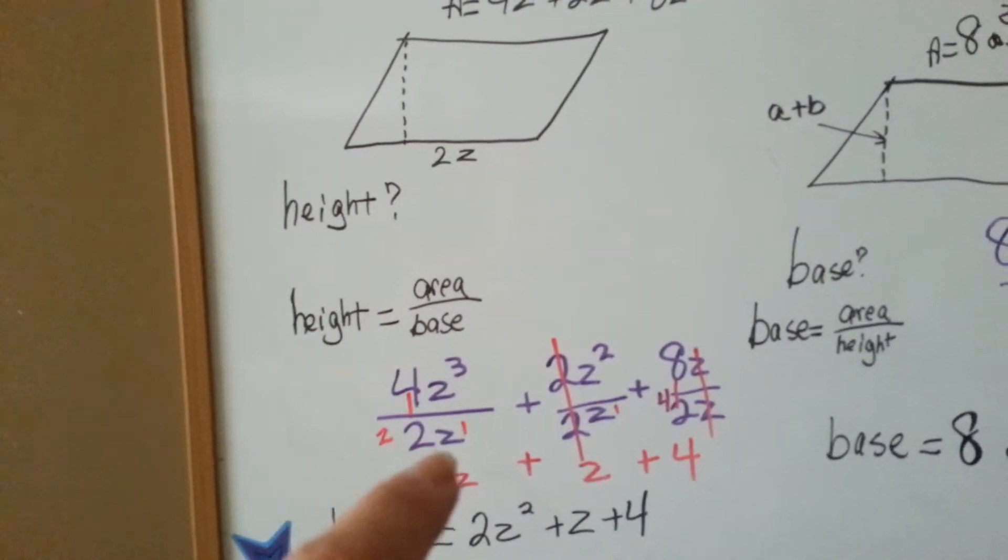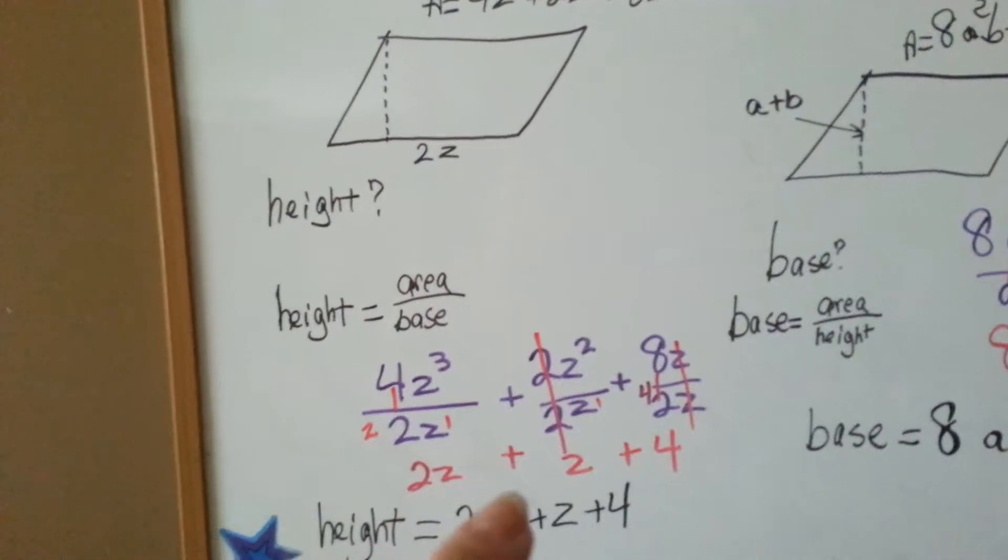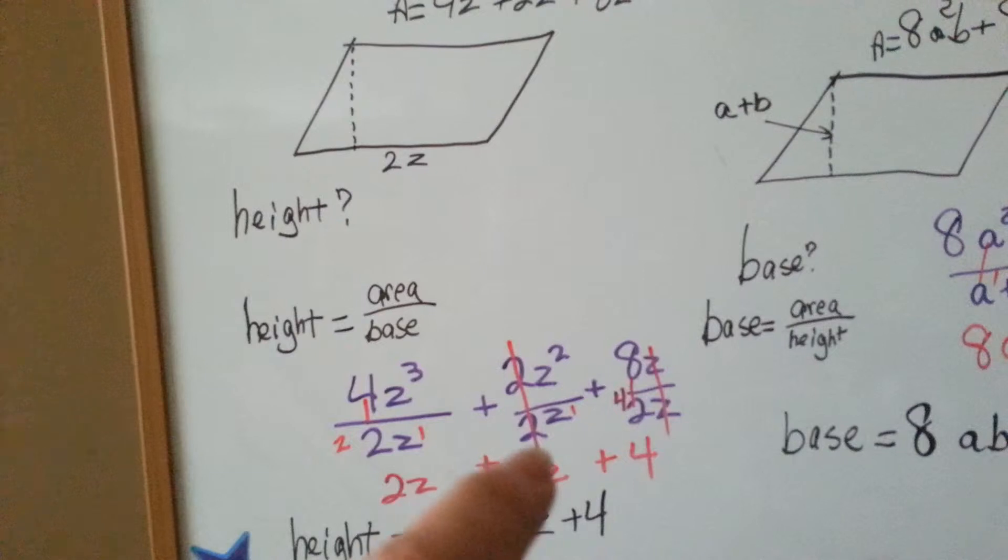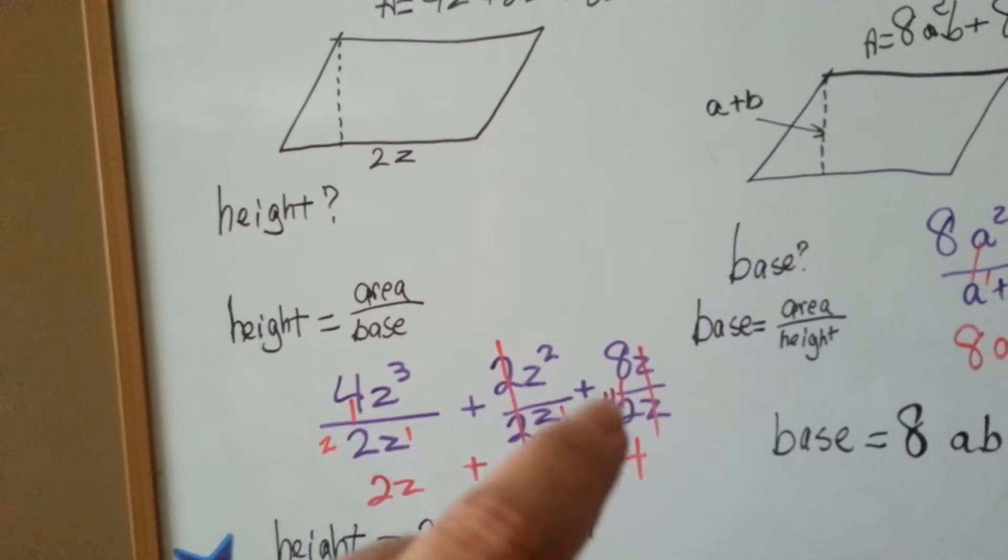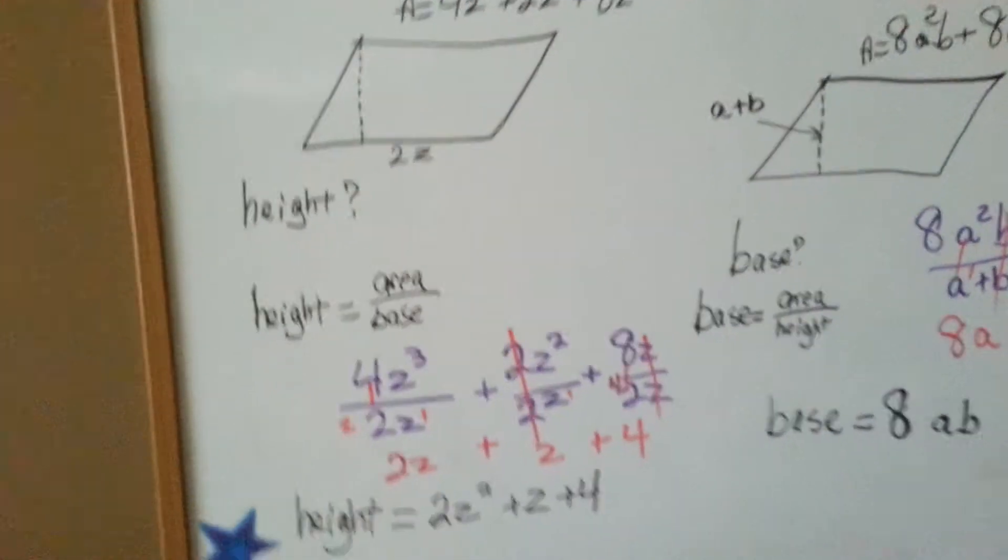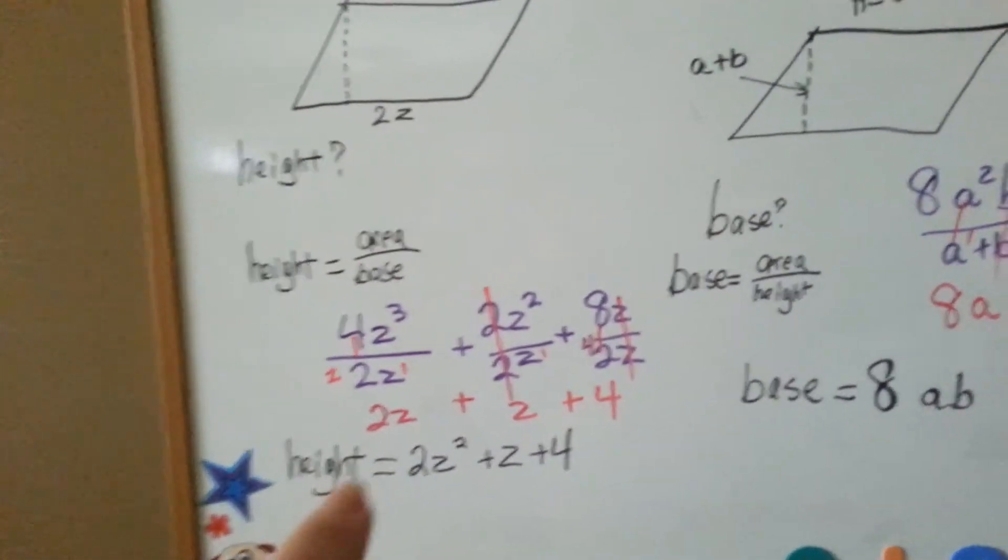3 take away 1 is 2. Remember, there's an invisible 1 there. 2 goes into 4 two times, plus sign. 2 cancels each other out. 2 take away 1 is 2, so we end up with just 1z here, and 2 goes into 8 four times, and the z's cancel each other out. So, our answer is 2z squared plus z plus 4 for our height.